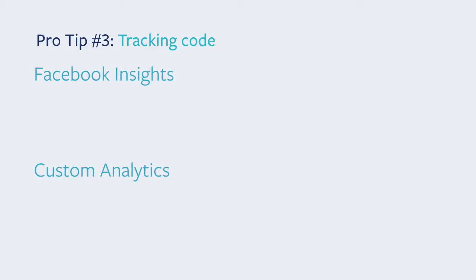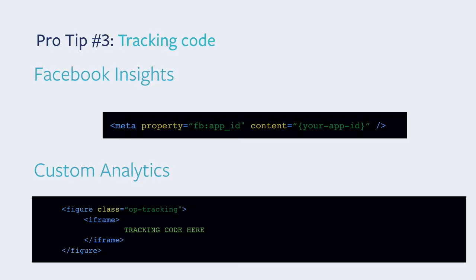For tracking, you might want to analyze how your audience is accessing your Instant Articles. We have two options: one is Facebook Insights — you just add the app ID you already have and get access to your Insights. Or if you want to use any other third-party tracking code, it works just like an iframe at the bottom of the article, and you can put any kind of tracking code there.